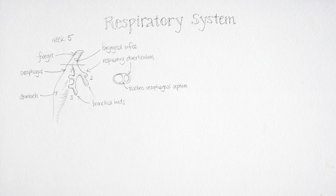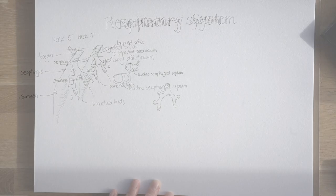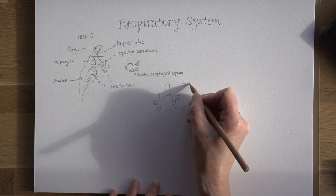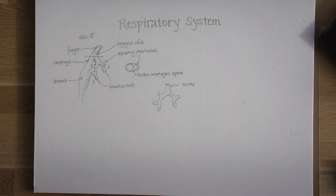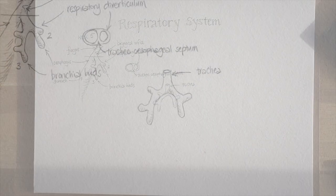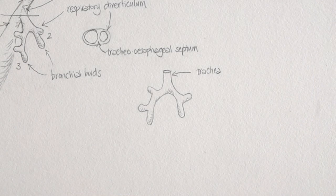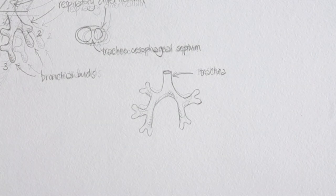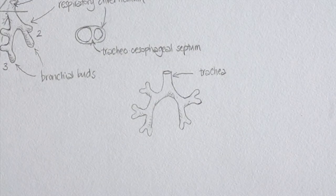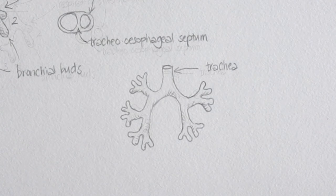Those bronchial buds have now branched, giving us the pattern of the lobar bronchi in each of the lungs — two on the left and three on the right — and they're just going to carry on branching and branching until we end up with the entire bronchial tree inside the lungs.